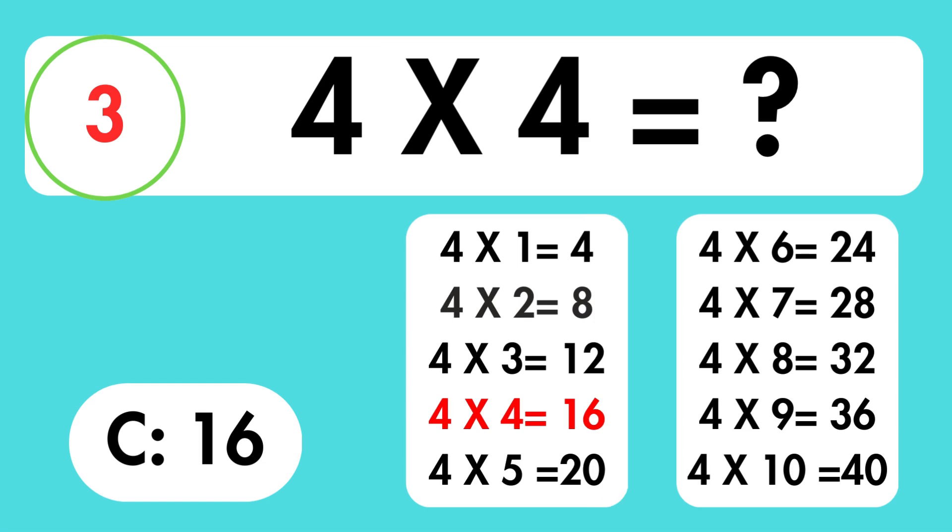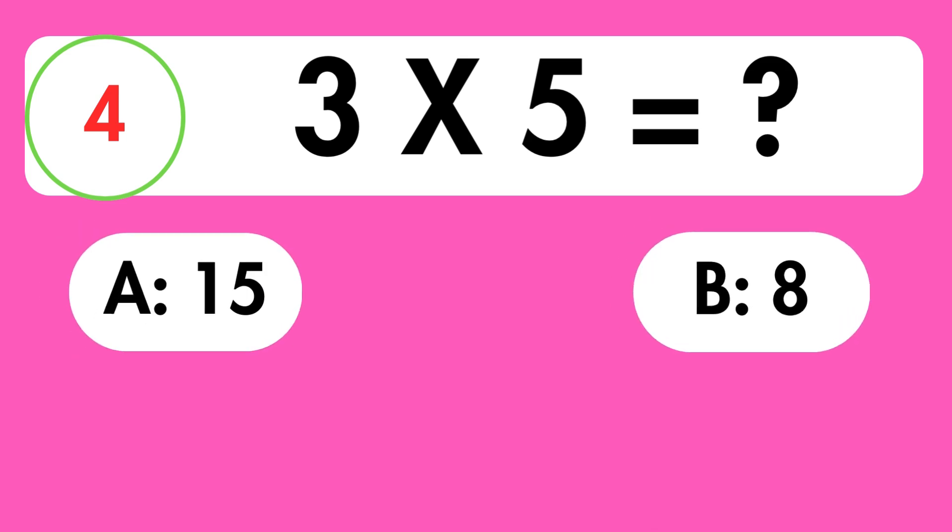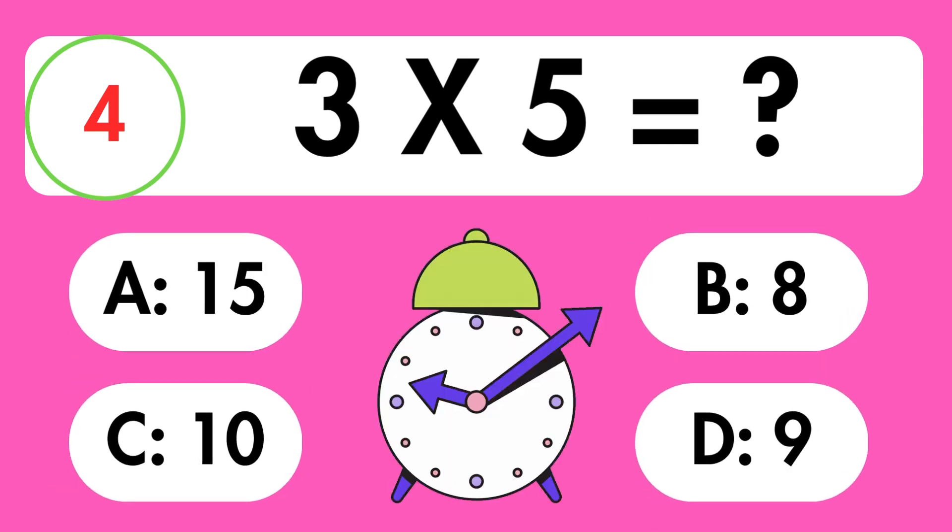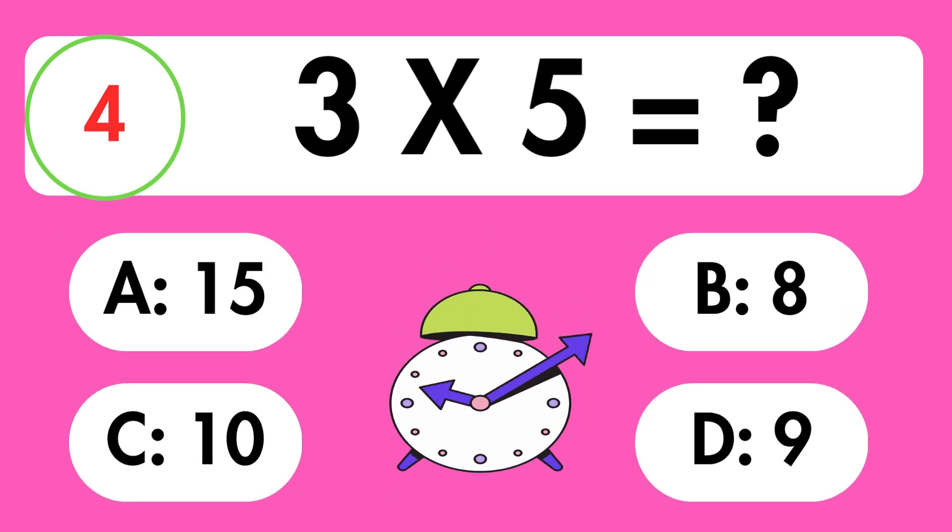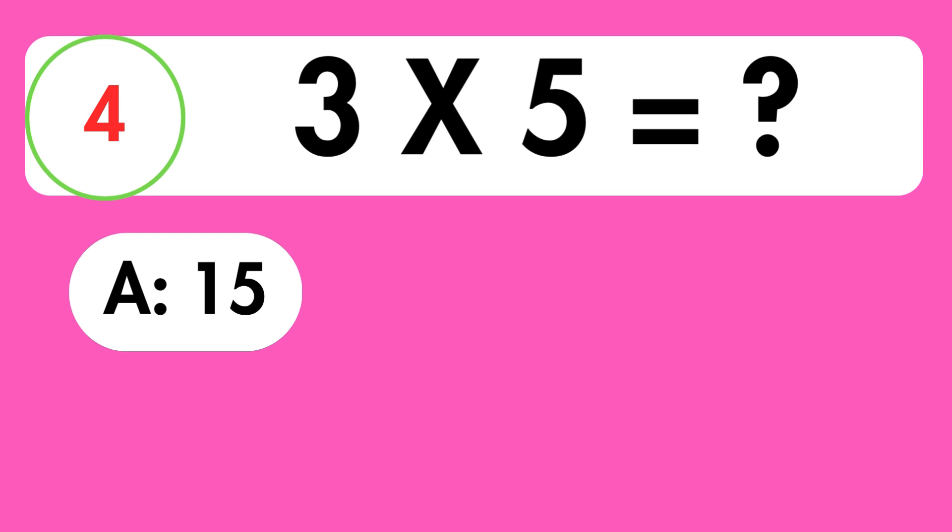4 multiplied by 4 is equal to 16. Question 4. What is 3 times 5 equals? Time's up. The answer is 15.